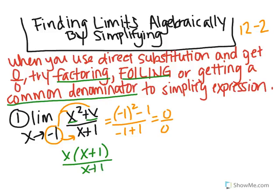There's a common factor that can actually cancel and simplify. So now I can just plug in the value of the limit, negative 1, and I end up getting negative 1 for the limit.